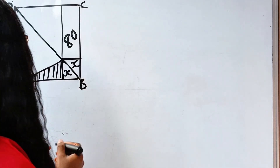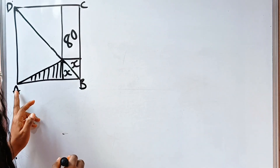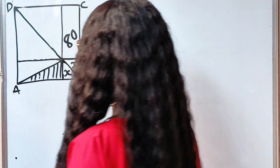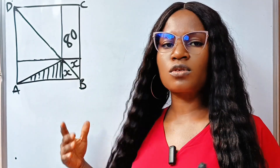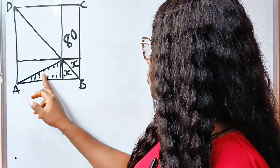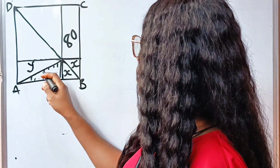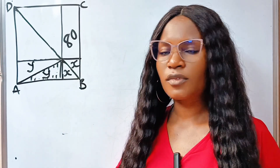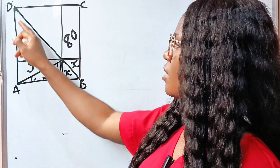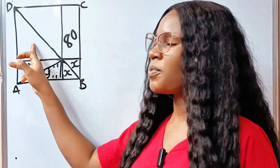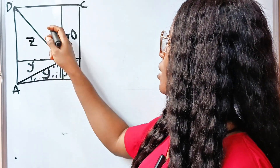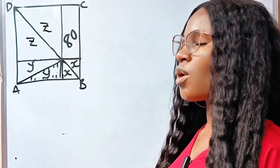Similarly, if we drop a parallel line to this point, we also have two triangles formed. Using the theorem I just explained, if the area of one side is y, the area of the other side is also y. You can also see that this place is another rectangle, so the area of this portion equals the area of the other portion. If we call this z, then the area of the other portion is also z.